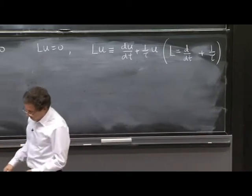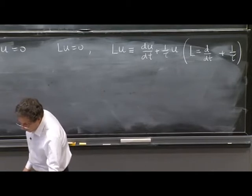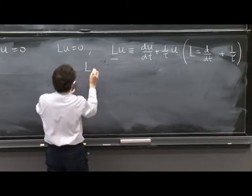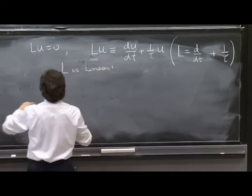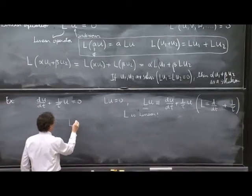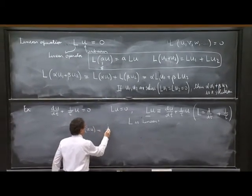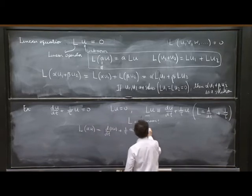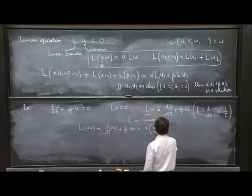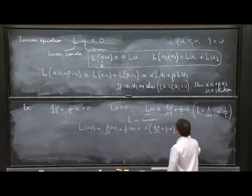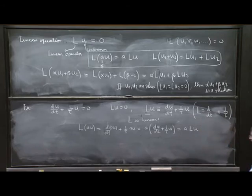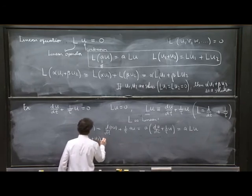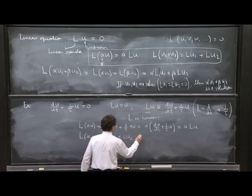And now, it is straightforward to check that this is a linear operator. L is linear. And for that, you have to check the two properties there. So for example, L on Au would be d/dt of Au plus 1 over tau Au, which is A times du/dt plus 1 over tau u, which is Alu. And you can check. I ask you to check the other property, L on u1 plus u2 is equal Lu1 plus Lu2. Please do it.